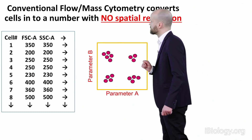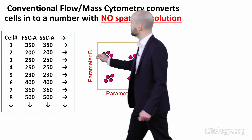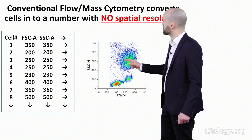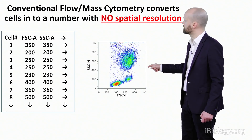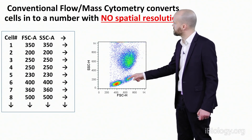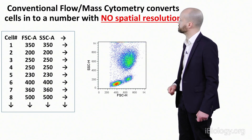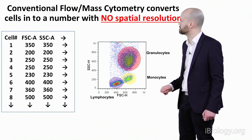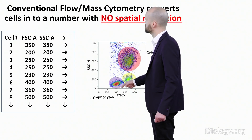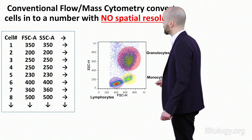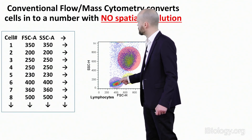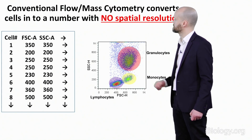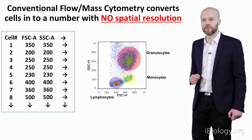We take these values and plot them against different parameters — in this example, a biaxial scatter plot. Using two parameters — forward scattered light and side scattered light — we can get a very good idea about where our lymphocytes, monocytes, and granulocytes would be. But as I keep stressing, we've lost all the morphology of our cells.